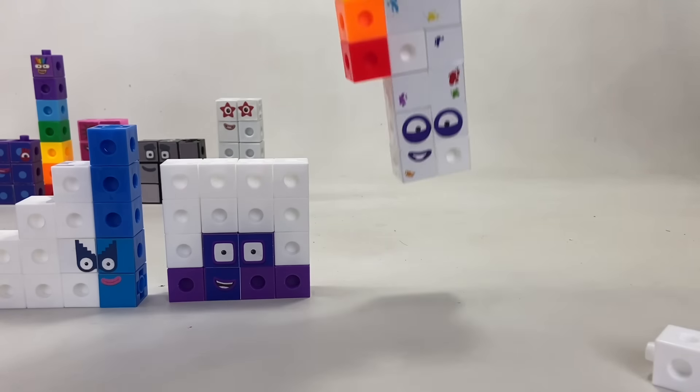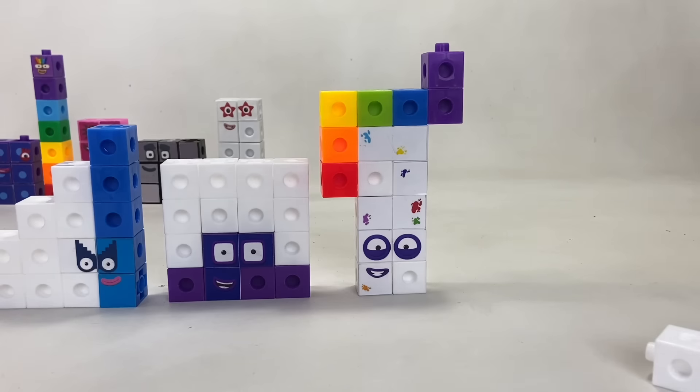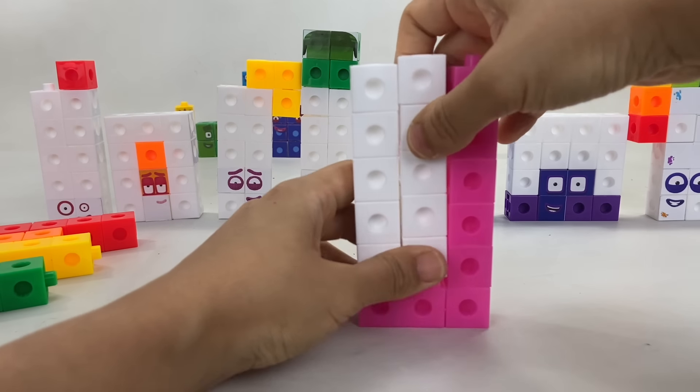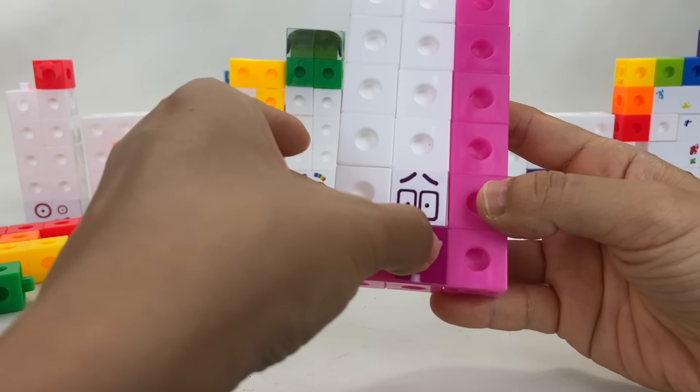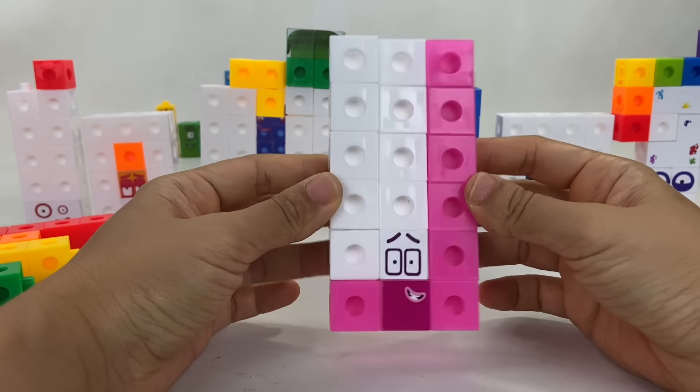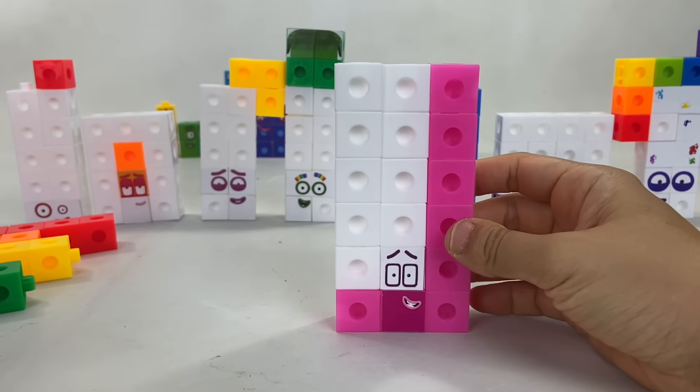Number Block 17. Now it's time to build Number Block 18. He's made up of 10 white blocks and 8 pink blocks with rectangular shaped eyes. I am 18 and I'm a super speedy super rectangle.